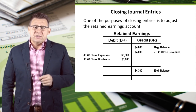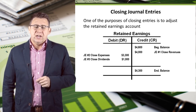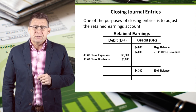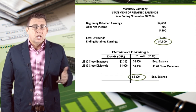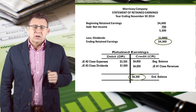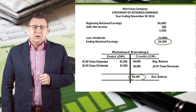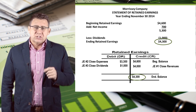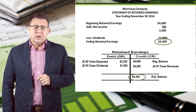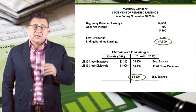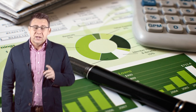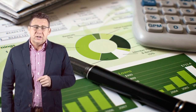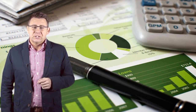Let's compare that to the statement of retained earnings and see what we reported to our investors and creditors. Now you can see that the ledger for retained earnings matches what we reported on the statement of retained earnings — it's like magic, only real. That concludes this important video on closing journal entries.